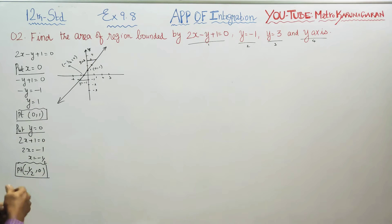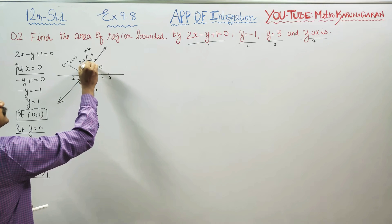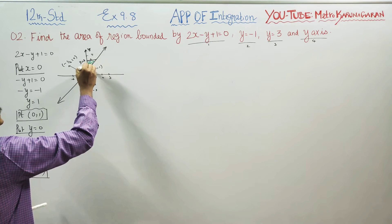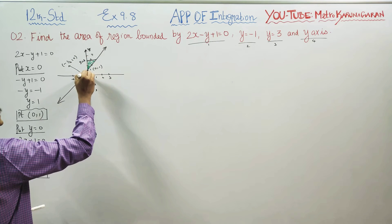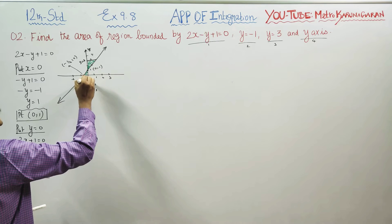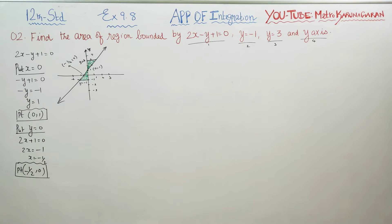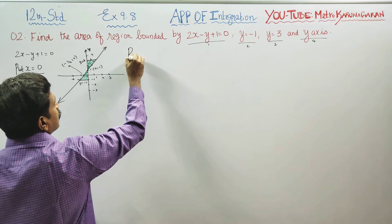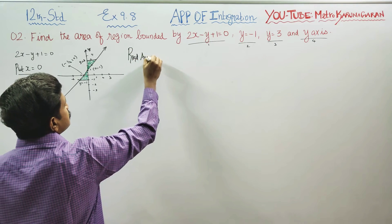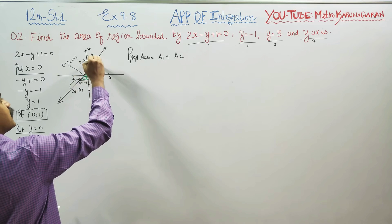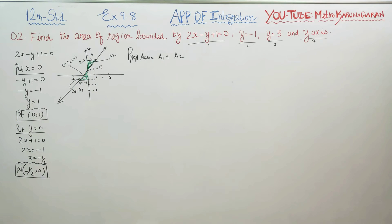Now we identify the area. Looking at the required area, we can see it is divided into two parts: the first area A1 and the second area A2, forming roughly a 2-3 triangle region. The required area consists of these two parts, A1 and A2.